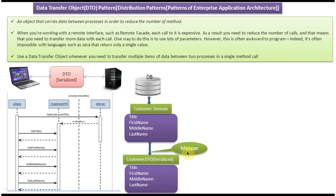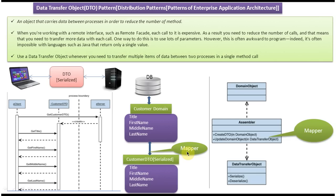We have seen the mapper — another name for the mapper is assembler. What it does is read the domain object and convert it to the DTO object, or read the data transfer object and convert it to the domain object — vice versa. It has two methods: create DTO, where you pass the domain object and the assembler reads its values and converts to DTO; and the reverse, reading the DTO and converting to the domain object.